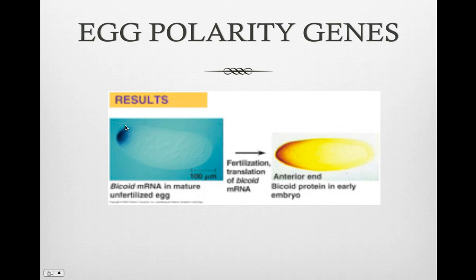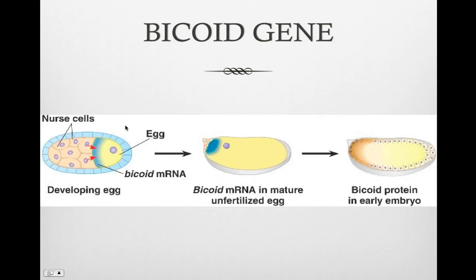Some egg polarity genes determine the head and the tail: the head is the anterior end, the tail is the posterior end. Some determine the back (dorsal side) and the belly (ventral side). Mutations in these genes are lethal; the embryo cannot develop. An example is the bicoid gene, which determines the anterior body plan. A mutant bicoid gene results in a fly with two tails and no head. The bicoid gene produces messenger RNA concentrated on one side of the egg, and that side determines the head. After the egg is fertilized, the messenger RNA is translated into proteins. Concentration gradients in eggs play an important role in embryonic development.